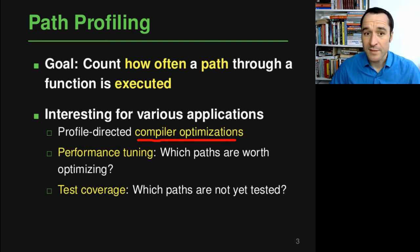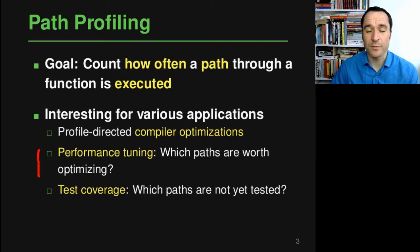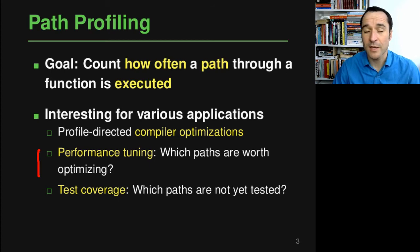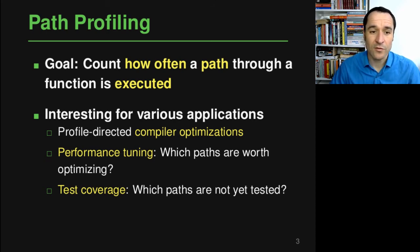Beyond automated compiler optimizations, you can of course do the same through manual performance tuning. If a developer wants to know which parts of a program are most worth optimizing, one way to answer that question is to run path profiling, which tells you which paths through a function or maybe an entire program are executed the most — and that's where you should spend your time if you want to tune performance.